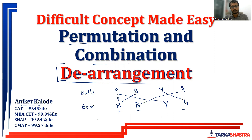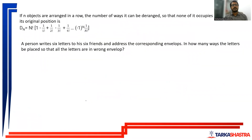We are going to understand the formula and how to apply it. This concept can also be applied on letters and envelopes, or on keys and locks — any key should not get into the proper lock, or any letter should not get into the proper addressed envelope. If n objects are arranged in a row, the number of ways it can be deranged so that none occupies its original position is Dn. It is n factorial times: 1 minus 1/1! plus 1/2! minus 1/3! plus 1/4! up to 1/n!, with alternating plus-minus signs.